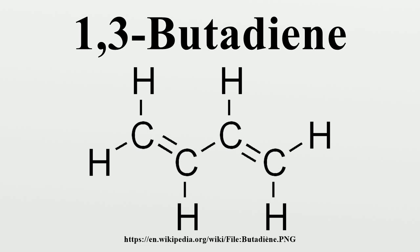Smaller amounts of butadiene are used to make the nylon intermediate adiponitrile by the addition of a molecule of hydrogen cyanide to each of the double bonds in a process called hydrocyanation, developed by DuPont. Other synthetic rubber materials such as chloroprene and the solvent sulfolane are also manufactured from butadiene. Butadiene is used in the industrial production of 4-vinylcyclohexene via a Diels-Alder dimerization reaction. Butadiene is also useful in the synthesis of cycloalkanes and cycloalkenes, as it reacts with double and triple carbon-carbon bonds through the Diels-Alder reaction.